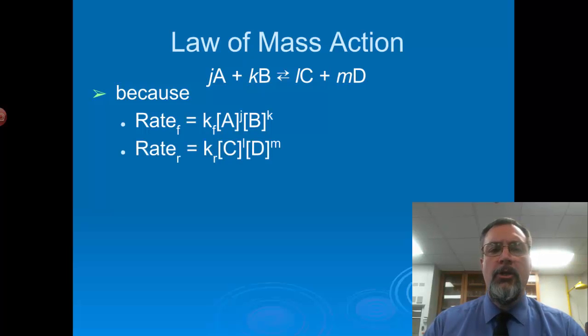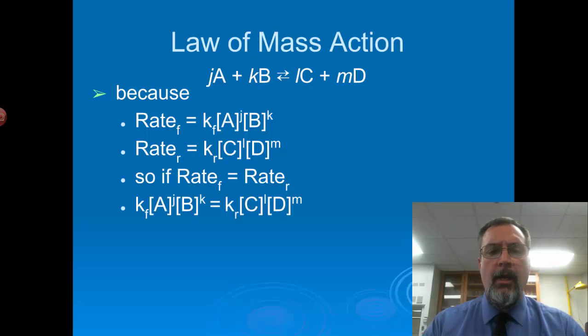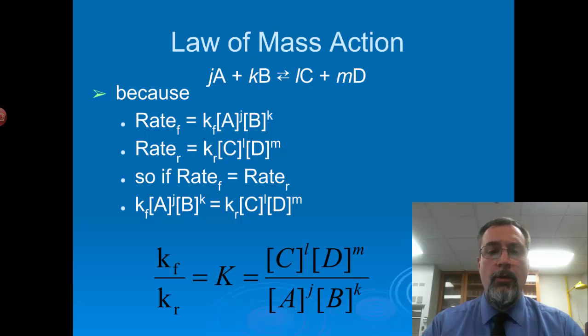And the rate of the reverse reaction is the opposite way. There's another k for the reverse reaction, a k_r, and then C to the l, concentration of D to the m. If the rates are equal, rate of forward reaction equals rate of reverse reaction, I can set them equal to each other. I can get the K's on one side and everything else on the other side by using just algebra. I get k_f over k_r is equal to concentration of C to the l, concentration of D to the m over concentration A to the j times concentration of B to the k. That k_f over k_r ratio of rate constant of forward reaction to rate constant of reverse reaction, we call the equilibrium constant. So that's really what it is. It's a ratio of rate constants.